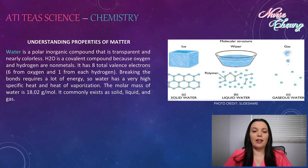Water is a polar inorganic compound that is transparent and nearly colorless. H2O is a covalent compound because oxygen and hydrogen are non-metals. It has eight total valence electrons, six from oxygen and one from each hydrogen. Breaking the bonds requires a lot of energy, so water has a very high specific heat and heat of vaporization. The molar mass of water is 18.02. It commonly exists as solid, liquid, and gas.